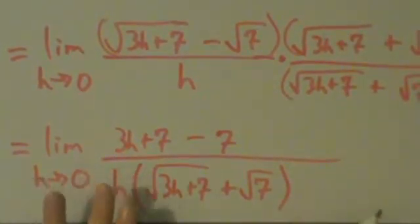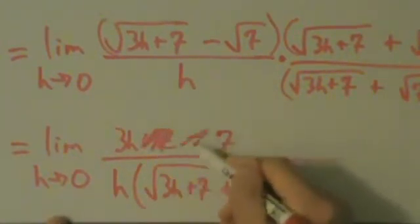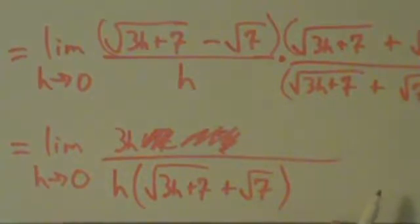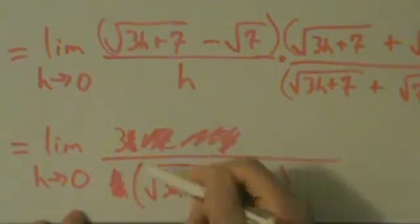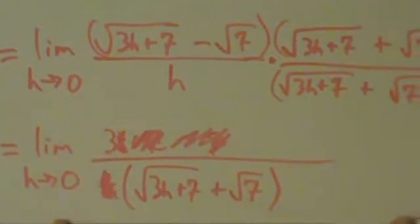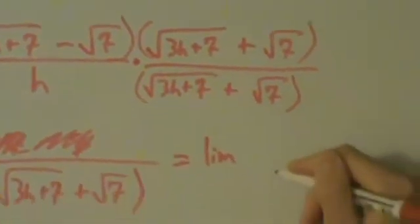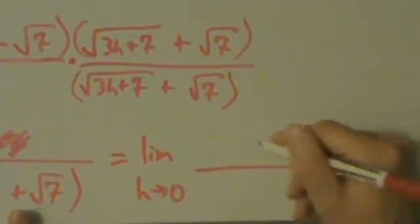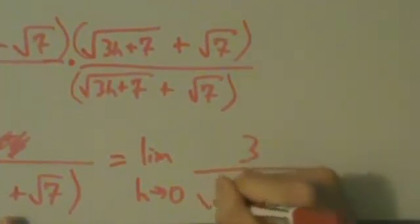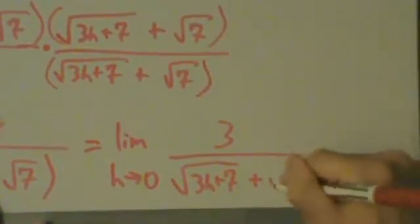Okay, so now this is good because what's happening on top, plus 7 minus 7, those cancel. That is great. Now we have 3h and then this h out here just kind of chilling by itself. So this h is going to cancel with this h. And now just the 3 is left up here. So what this really is now is equal to the limit as h goes to 0 of 3 divided by root 3h plus 7 and then plus root 7.